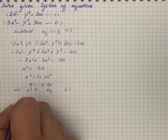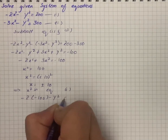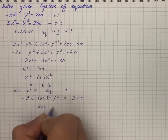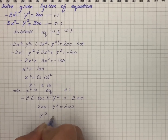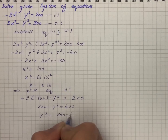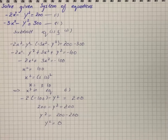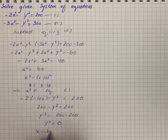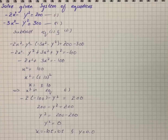Substituting x² = minus 100 into equation 1: minus 2 times (minus 100) minus y² equals 200. This gives 200 minus y² equals 200, so y² equals 0, and y equals 0. The solution of the given system is x equals plus or minus 10i and y equals 0.